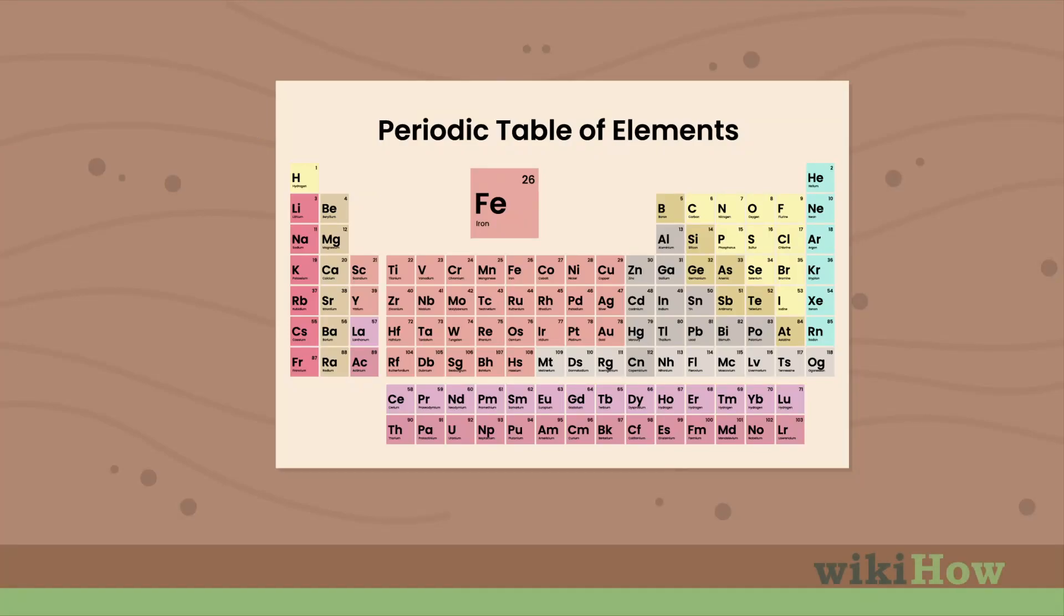To find the number of neutrons in an atom, you just need a periodic table that lists the atomic number as well as the atomic weight of each element.